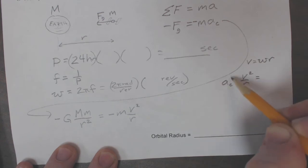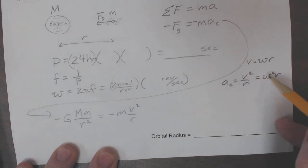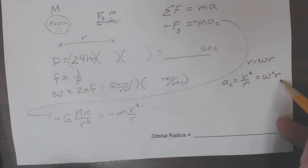And so another way to write centripetal acceleration is ω squared r. Because you put the ω r right here, you get ω squared, one of the r's cancel out, and you get this. So that's another way of writing that.